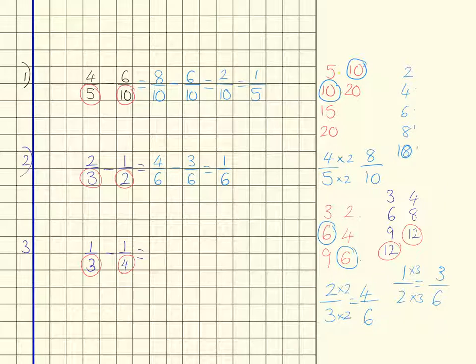So I'm going to do that here, I'm going to need to turn 1 third into something over 12, and I'm going to need to turn 1 quarter into something over 12. So I can see I need to multiply the 3 by 4, so times it by 4, which means I'm timesing by 4 here, so I've got 4 over 12.